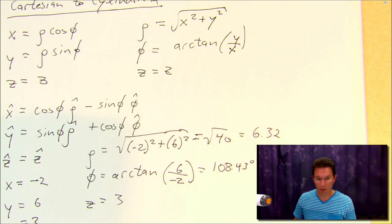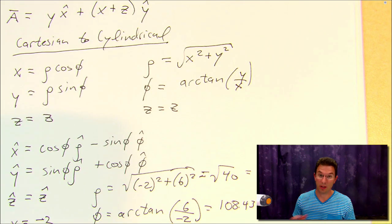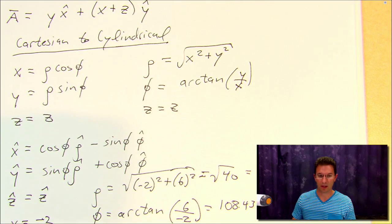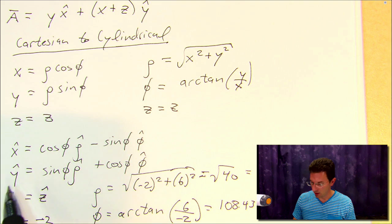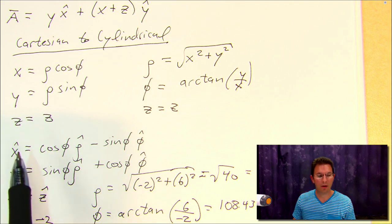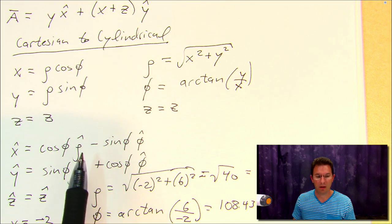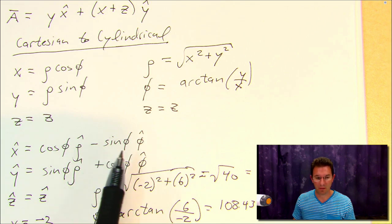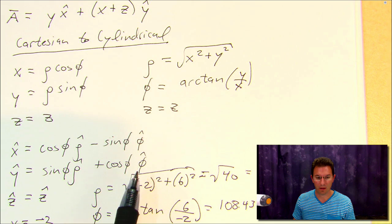Now, if we want to convert this vector field A from Cartesian to cylindrical coordinates, we're going to need these expressions here for the unit vectors. So x̂ is equal to cos φ ρ̂ minus sin φ φ̂, and ŷ is sin φ ρ̂ plus cos φ φ̂.